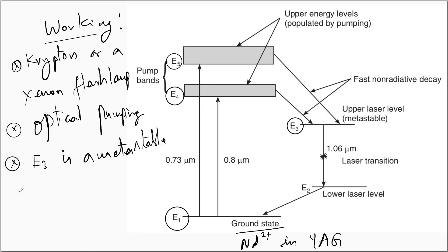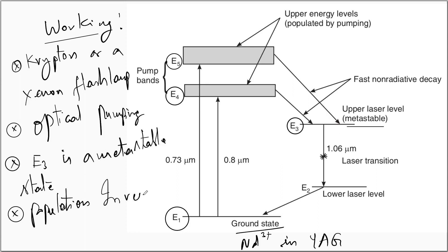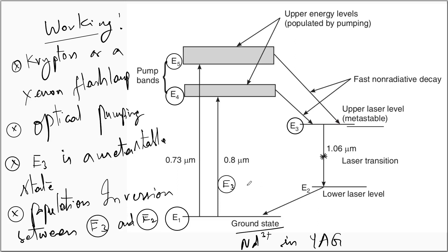E3 is a metastable state. Population inversion is achieved between E2 and E3. A stimulated downward emission transition from E3 to E2 gives the lasing. From E2 the electron makes a downward non-radiative spontaneous transition to the ground state E1. As a result, the Nd3+ ions are again available in their ground state.